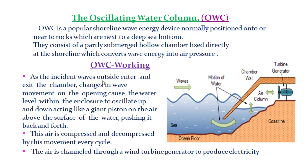As the incident waves outside enter and exit the chamber, changes in wave movement at the opening cause the water level within the enclosure to oscillate up and down, acting like a piston on the air above the surface of the water, pushing it back and forth. This air is compressed and decompressed by this movement every cycle, and is channeled through a wind turbine generator to produce electricity.